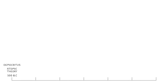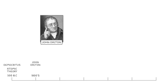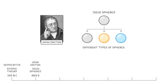It then took another 2300 years — meaning the 1800s — before anyone really improved on his ideas. At this point, John Dalton described atoms as solid spheres, and importantly he suggested that different types of spheres might make up the different elements.